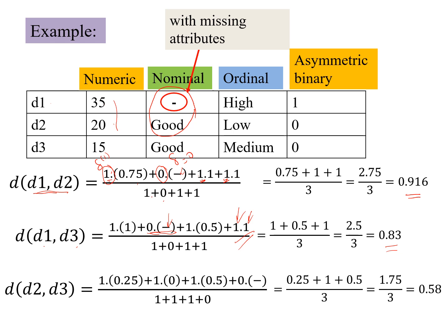Now we look at d2, d3. Here, we do not have the missing attribute. So our delta for the second attribute here is 1, not 0, like the previous two cases. However, look at this. Because of both 0s, our delta is 0.